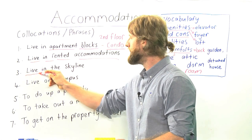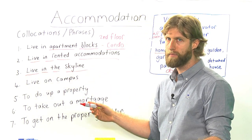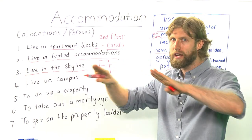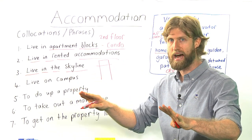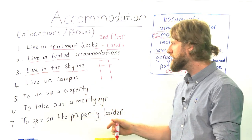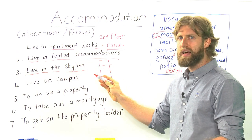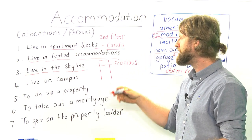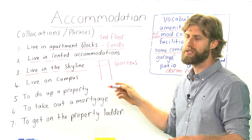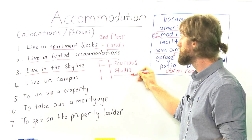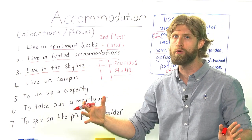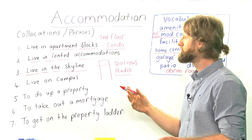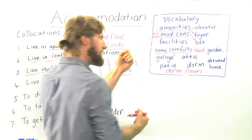Live in the skyline. The skyline means you are on a very high floor and you can look out over the skyline — the line in the sky — you can see very far over the city. So you can say: I live in the skyline in a very open, spacious — spacious means you have a lot of space — studio apartment. Or: I live in the skyline and it has a lot of wonderful mod cons.